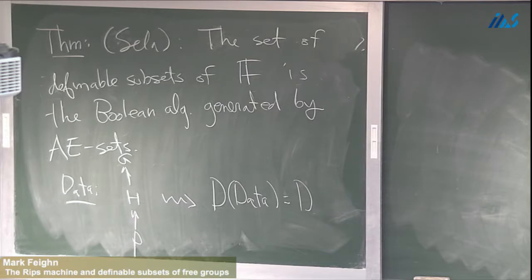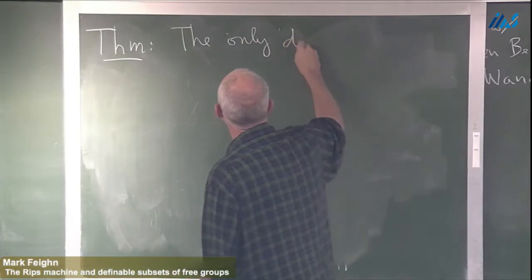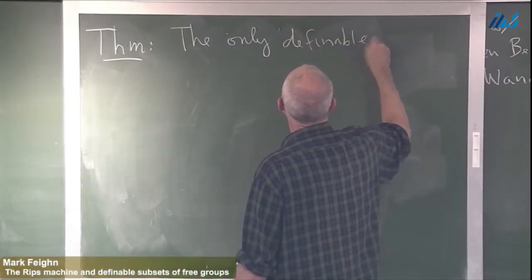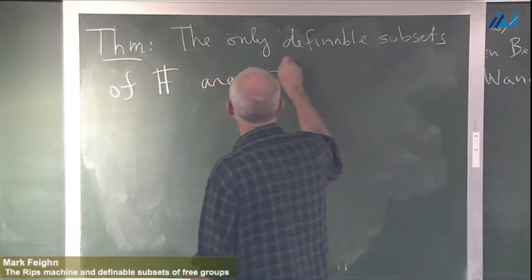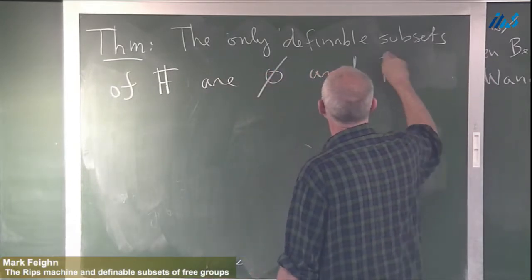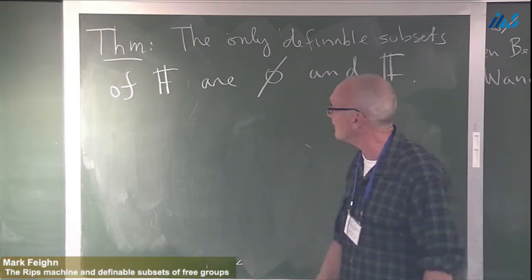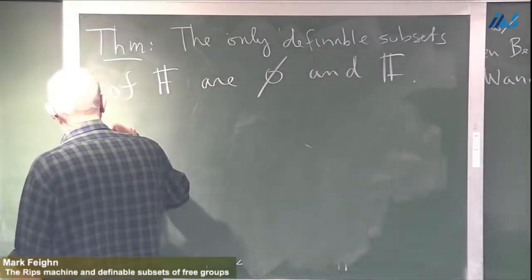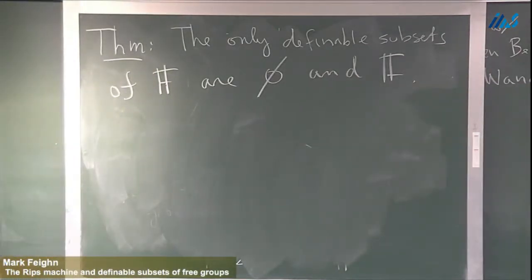Today we want to prove a ridiculous statement that's obviously false. The theorem says: the only definable subsets of the free group are the empty set and the free group itself — so there are only two. This is patently false, but let's try to prove it anyway and see how far we get. The proof of this statement is the main thing we're going to do today.